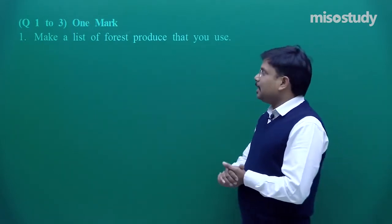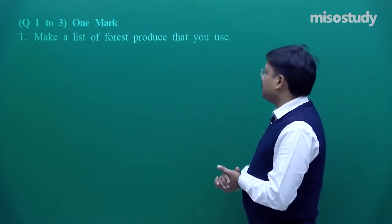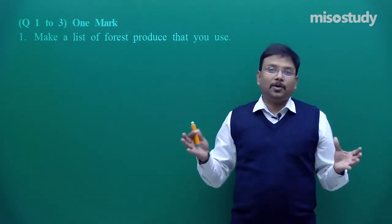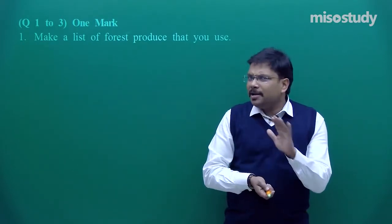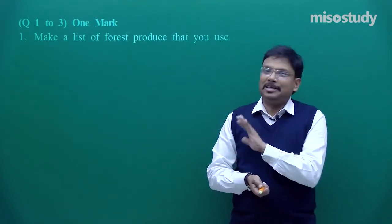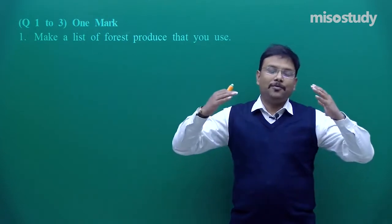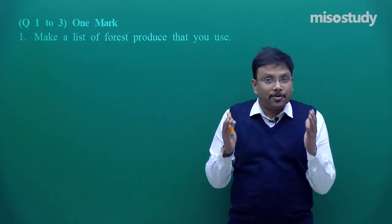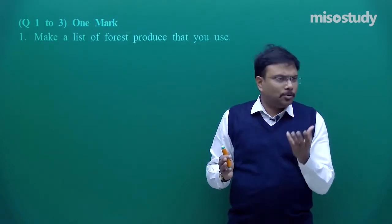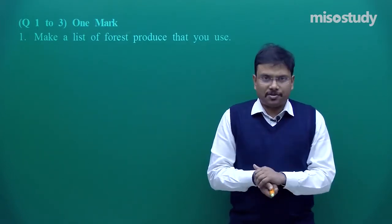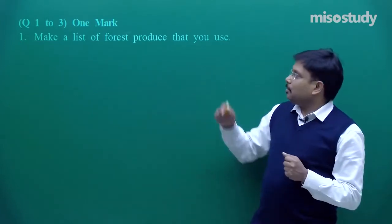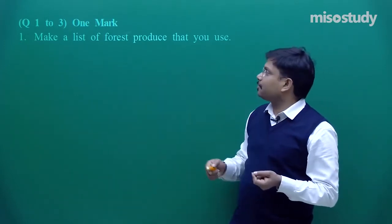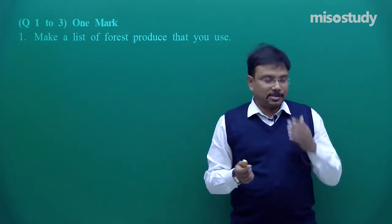The first question is: make a list of forest produce that you use. This is such an open-ended question — you need not prepare anything for this type of question. You have to visualize, you have to think, you have to use your thinking power, visualization, and day-to-day life observations. Let us try to mention a few products that we are getting from the forest.